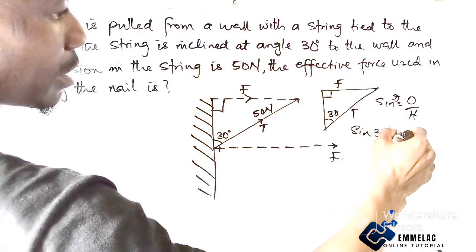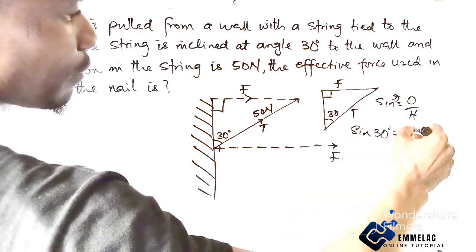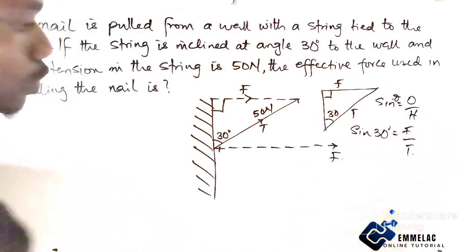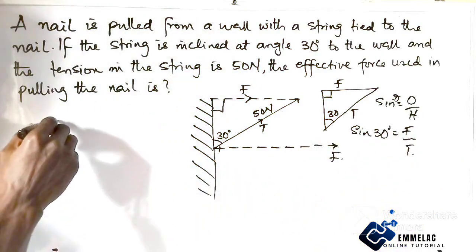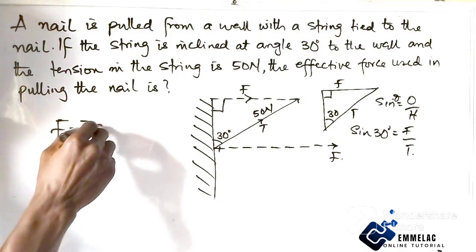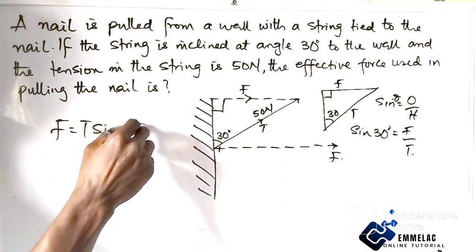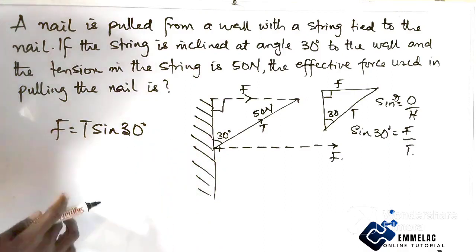here, the effective force will be T sine theta. Sine theta gives us 0.5, and our tension here is 50, so we have 50 times